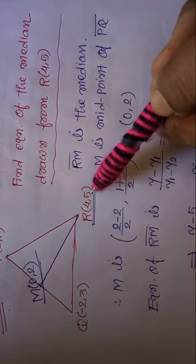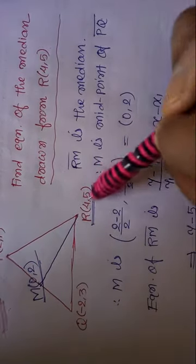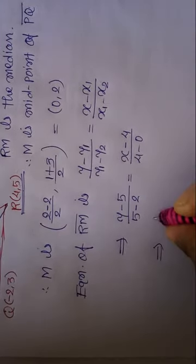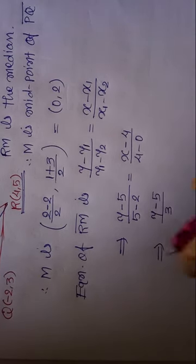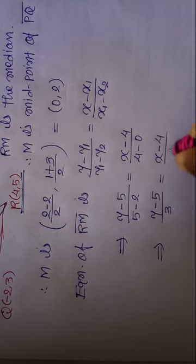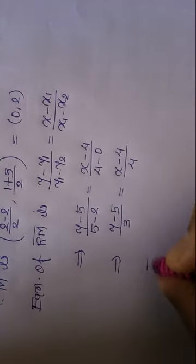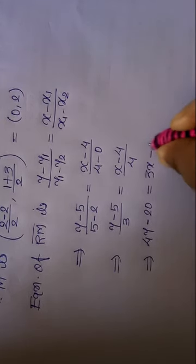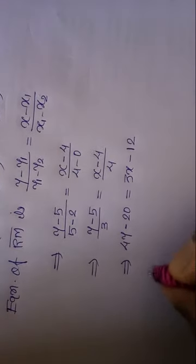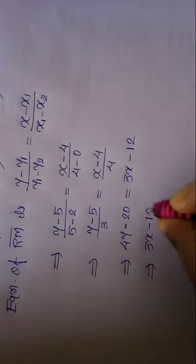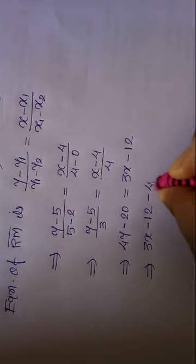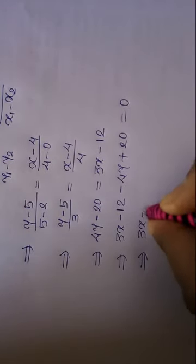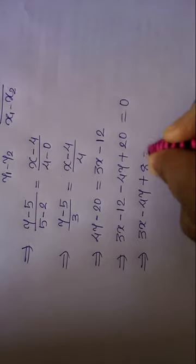So y minus 5 over 3 equals x minus 4 over 4. Cross-multiplying: 4y minus 20 equals 3x minus 12. Rearranging all terms: 3x minus 4y plus 8 equals 0.